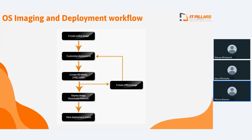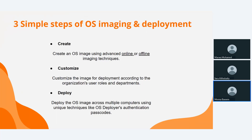This architecture behind OS Deployer explains the main steps to make a deployment. First, we create your master image — and we have different methods to take this image. Step two, customize the deployment as per your needs. Step three, push your master image out to one machine or multiple machines as needed. Let's talk in detail about these three steps.